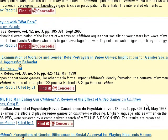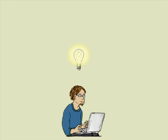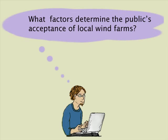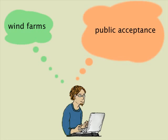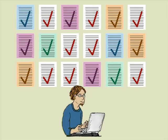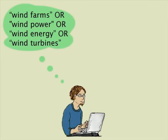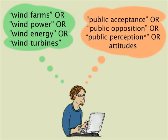Let's briefly look at another research question and a different database. This student wants to write about what causes the public to accept or oppose having a wind farm near where they live. He's broken it down into the following key concepts: wind farms and public acceptance. It's important to think of synonyms or related terms so that you can retrieve all possible relevant documents. Wind farms could also be discussed by the terms wind power, wind energy, or wind turbines. And for the second concept, public acceptance could also be discussed as public opposition, public perception, or public attitudes.